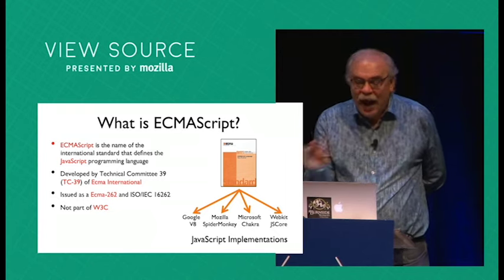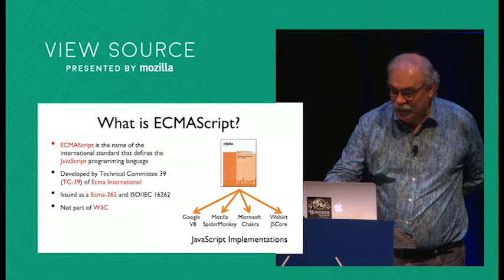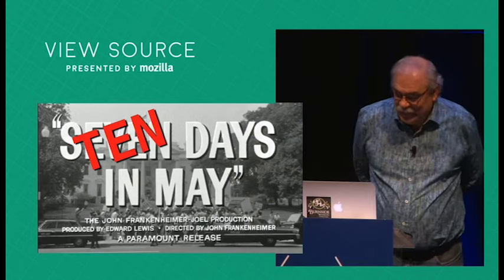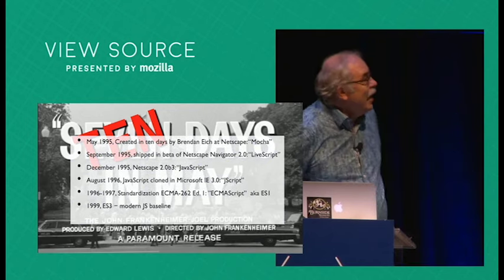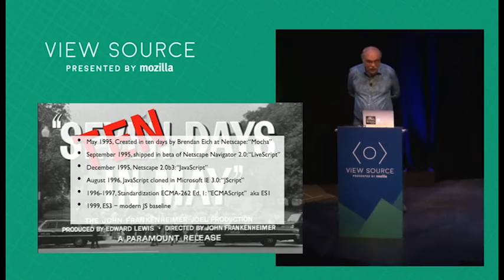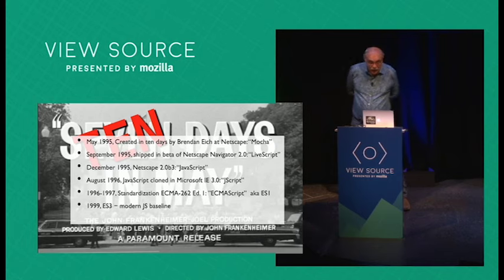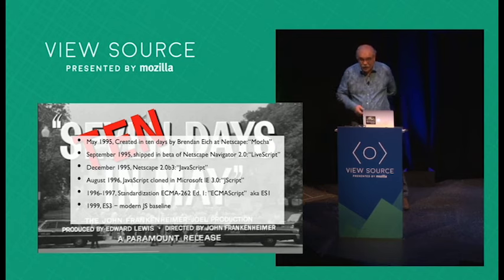I want to go back and explain how that started and how we worked up to where we are today with the ECMAScript standard. The creation myth of JavaScript was that it was created in 10 days in May of 1995 by Brendan Eich — that was 20 years ago. Over the next year it went through a couple names: first Mocha, then LiveScript, and by the end of 1995 it was shipping in Netscape as JavaScript. Within the next year it had been cloned by Microsoft in Internet Explorer, where it was called JScript.